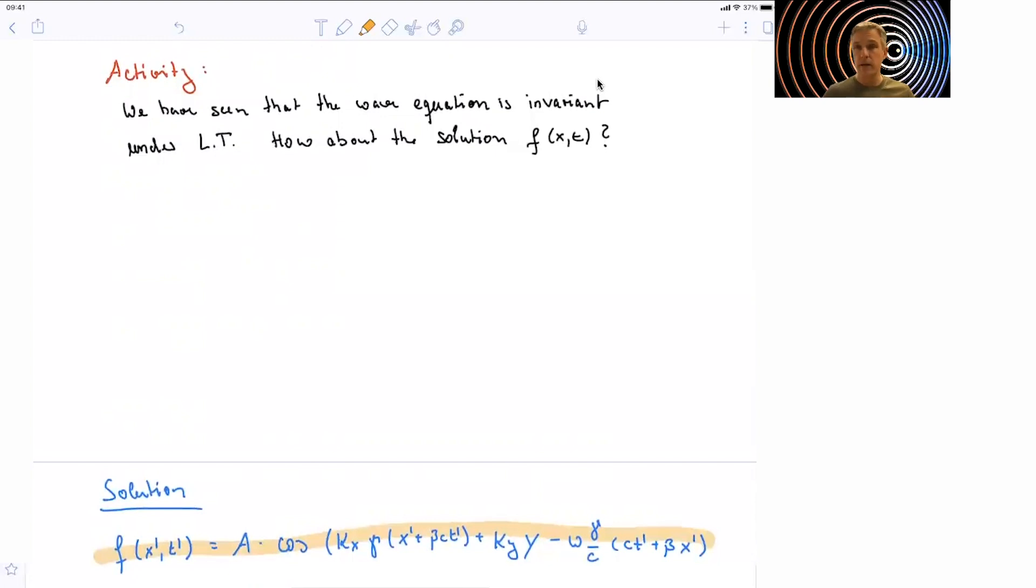But we can try to re-find the very same characterization of the wave as we had before. How does now the transformed wave number look like? How does the frequency look like after Lorentz transformation?